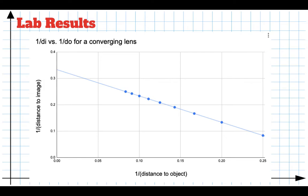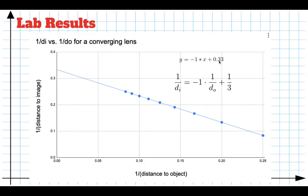So we can use y = mx + b to find a mathematical model. When your computer finds the best-fit line, you get an equation where the slope is negative 1 — pretty darn close, 0.99 or 1.01 — and the intercept is about 0.33. Rewriting with our variables: 1 over d_i equals negative 1 times 1 over d_o, plus the intercept. Instead of writing the intercept as 0.33, I'll write that as 1/3. And notice that 1/3 was the asymptote — that was the focal length of the lens we used in lab.